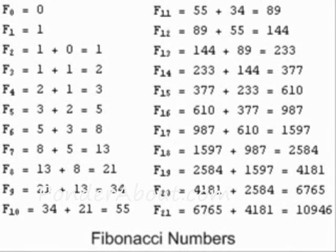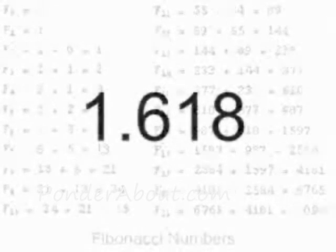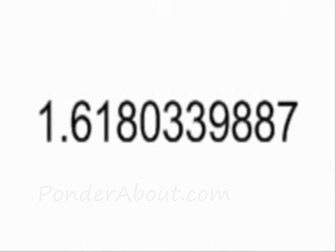Now, take any two neighbouring Fibonacci numbers, divide the larger by the smaller, and you get roughly 1.618 — nature's number: 1.618039887498 94 84.